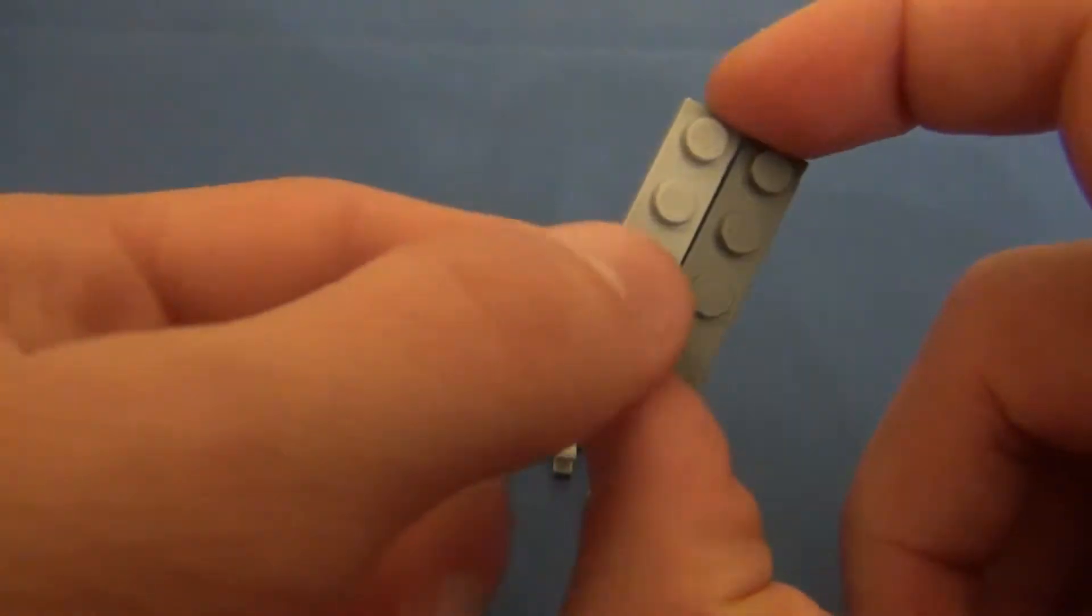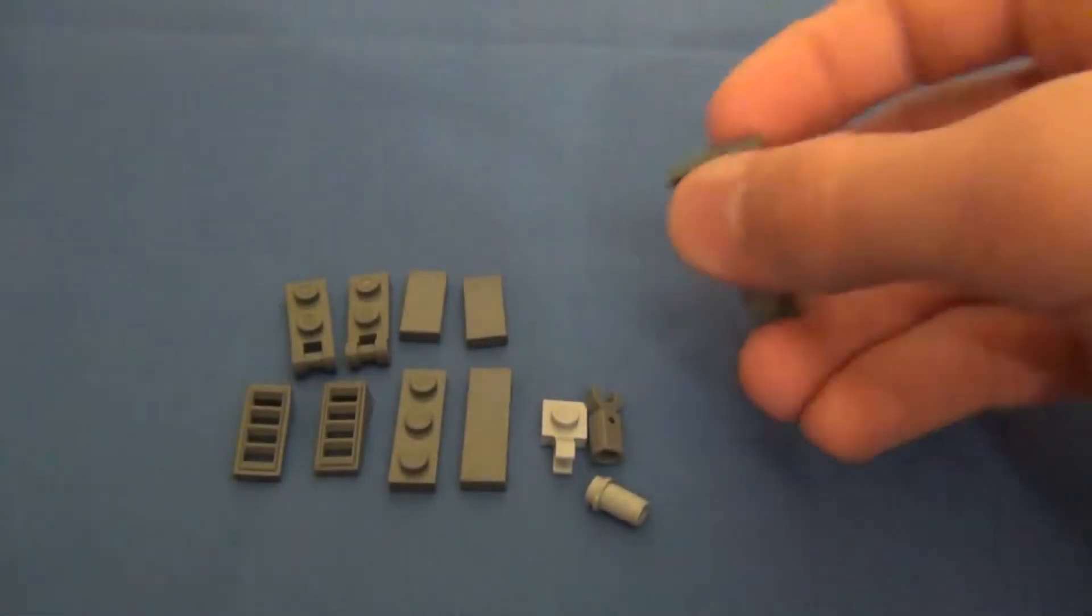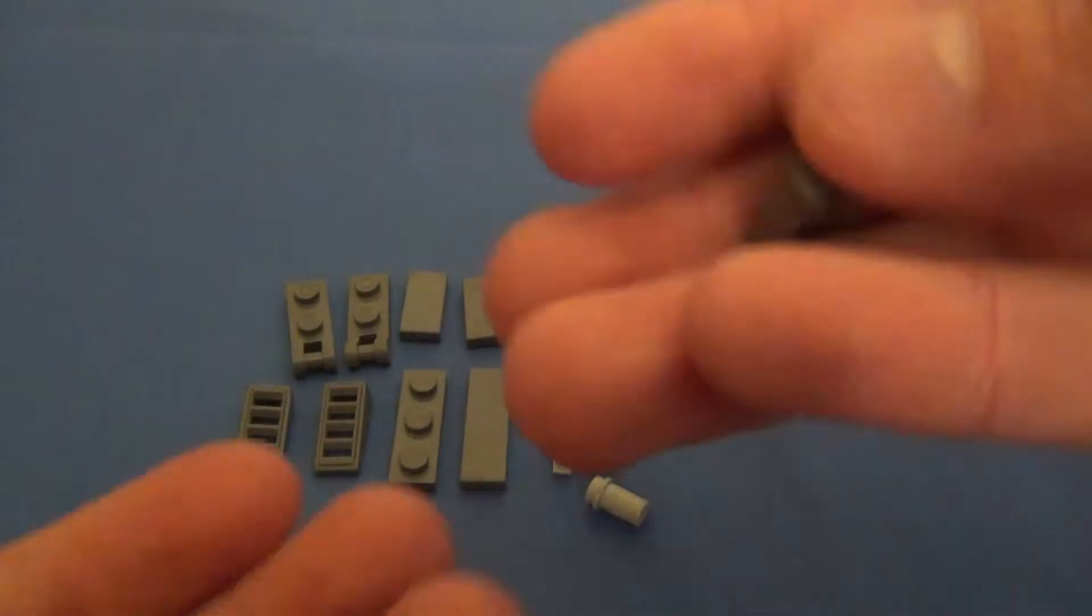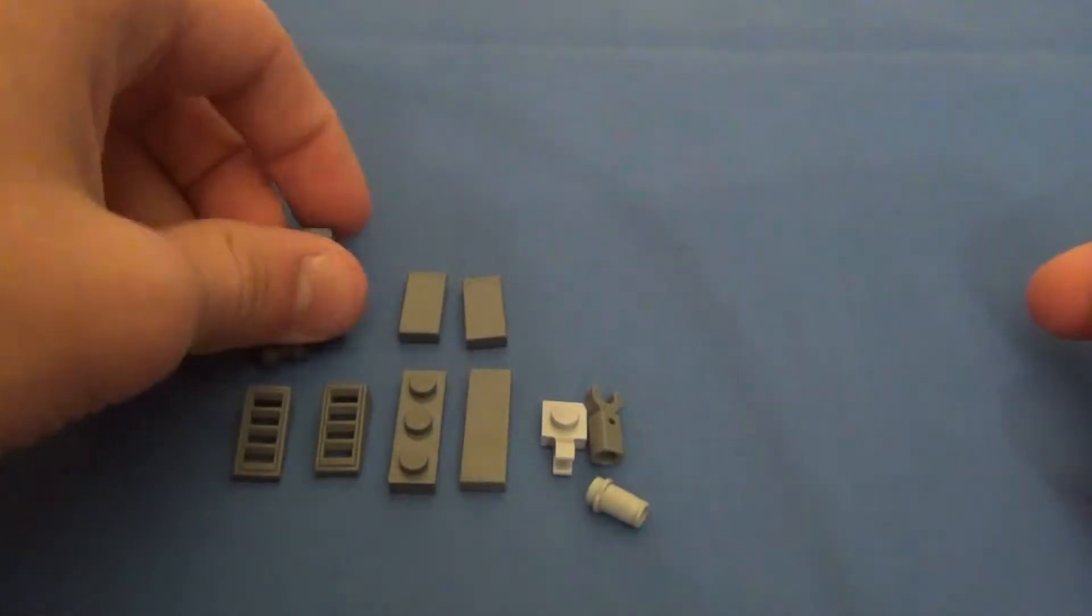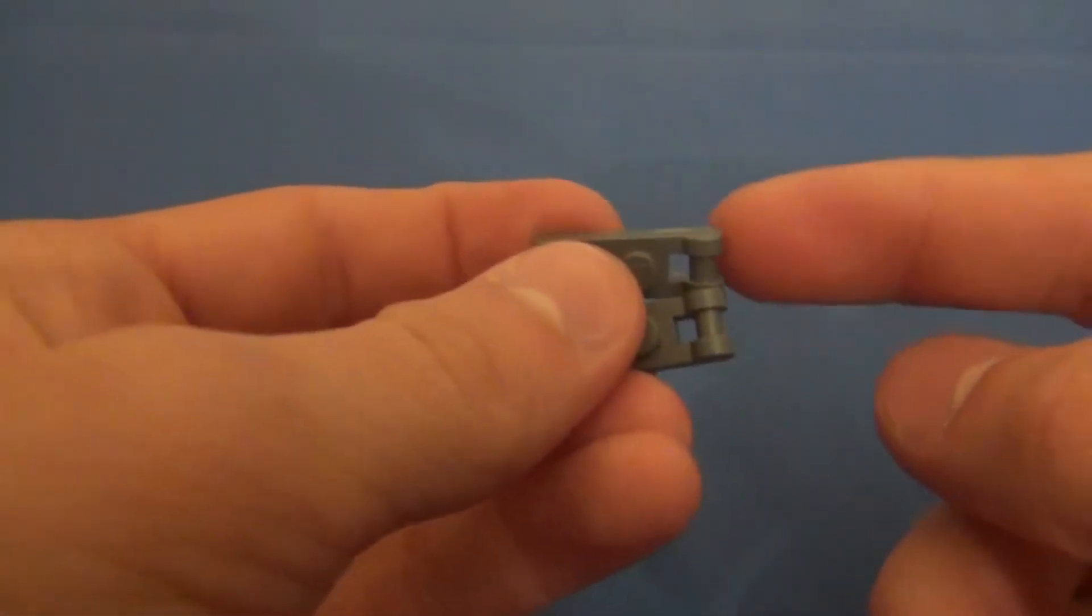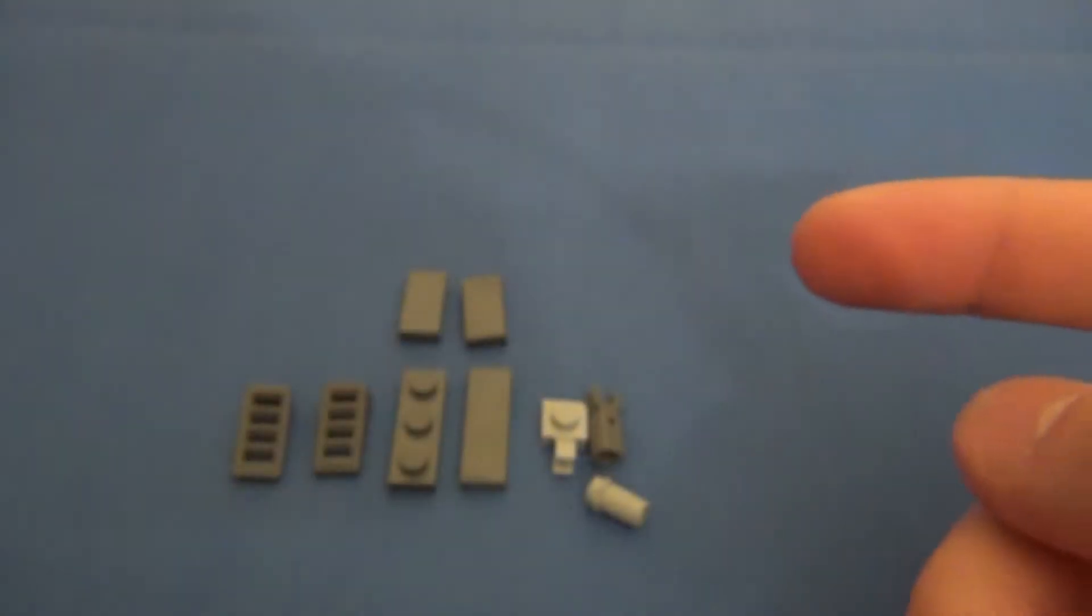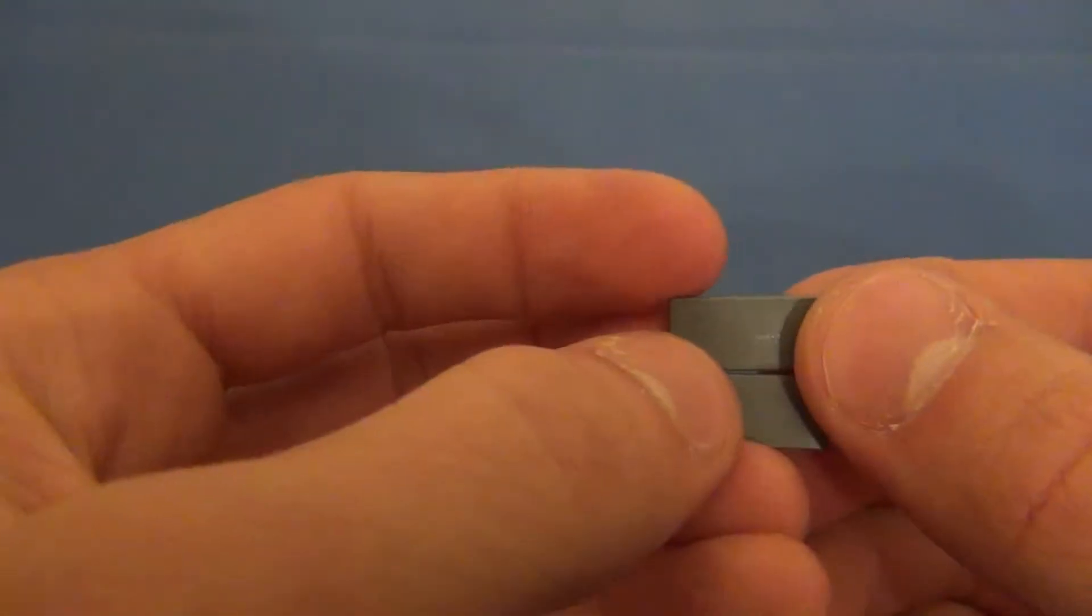So you will need two dark grey 1x4 plates, two dark grey 1x2 plates, two dark grey 1x2 plates with this horizontal bar, two dark grey 1x2 tiles,